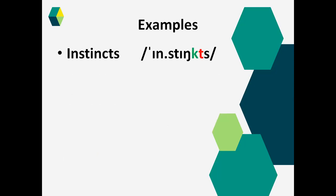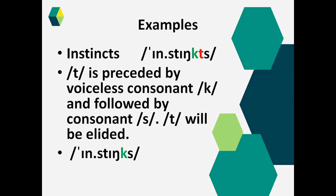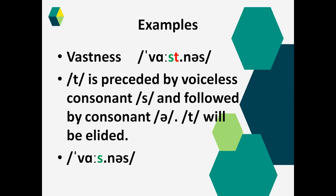Let's see another example. It is 'instincts'. The /t/ has /k/ sound before it, which is a voiceless consonant, and after /t/ we have /s/, which is also a consonant. So /t/ is preceded by voiceless consonant /k/ and followed by consonant /s/, so /t/ will be elided — 'instincts' becomes 'instinks'. Another example is 'vastness'. The /t/ is preceded by voiceless consonant /s/ and followed by consonant /n/, so /t/ will be elided and it becomes 'vasness'.